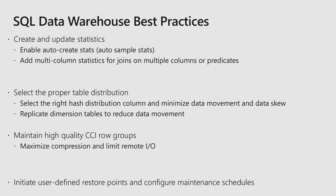Using statistics, the optimizer will select the most efficient plan and thus have faster execution. The more the query optimizer knows about your data using statistics, the faster query performance will be. First, create and update statistics, enable auto create stats. This will use the default sampling rate of about 20%, and also add multi-column statistics for joins on multi-columns or predicates.